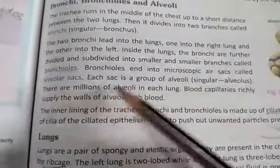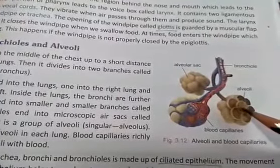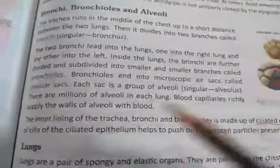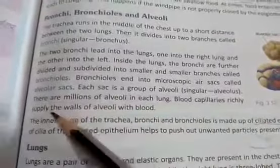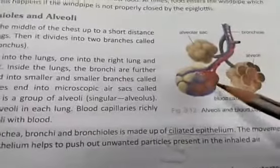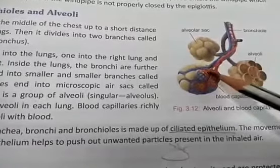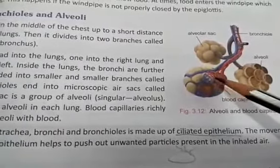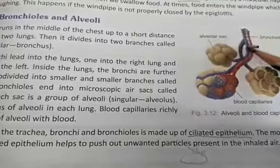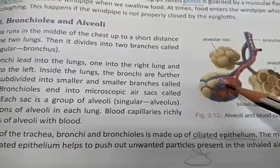Each sac is a group of alveoli (singular: alveolus). There are millions of alveoli in each lung. Blood capillaries richly supply the walls of alveoli with blood. Every alveolar sac has a supply of blood capillaries. The bronchioles carry air into these sacs, and from here the oxygen in the air gets transported to the blood capillaries.